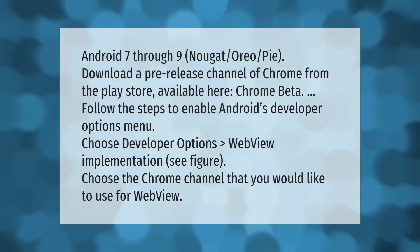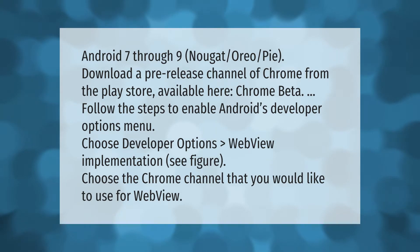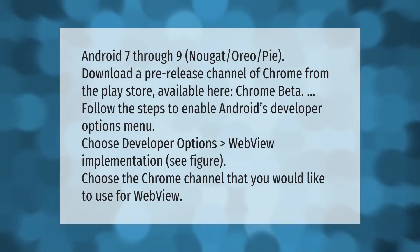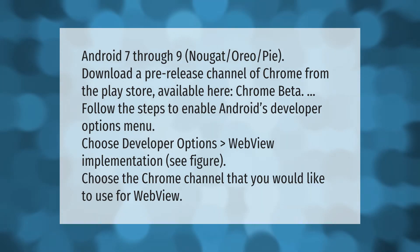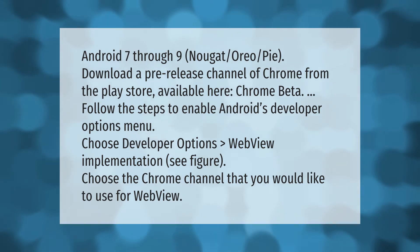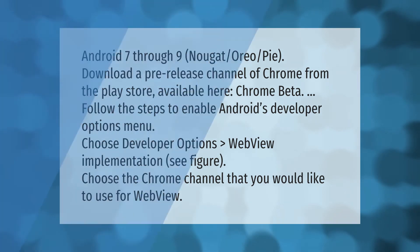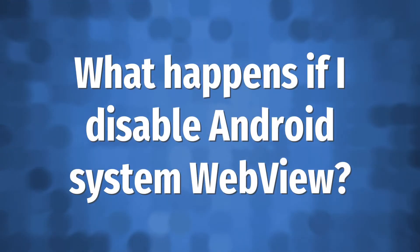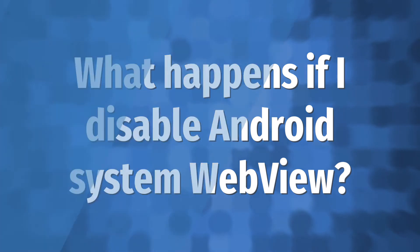For Android 7 through 9 (Nougat, Oreo, Pie): download a pre-release channel of Chrome from the Play Store — Chrome Beta. Follow the steps to enable Android's Developer Options menu, then choose Developer Options → WebView Implementation. Choose the Chrome channel that you would like to use for WebView.